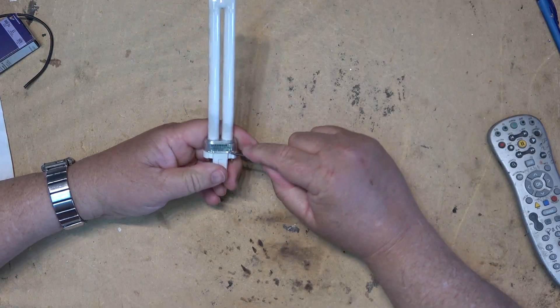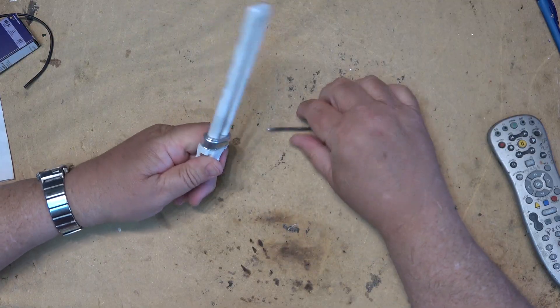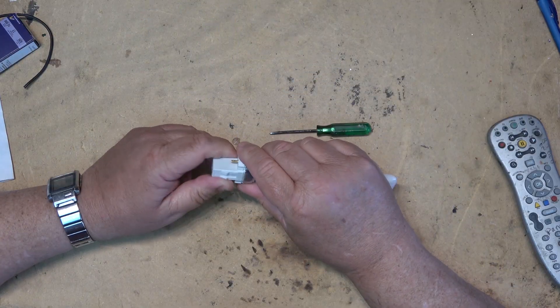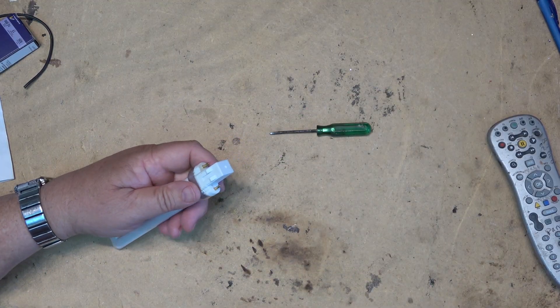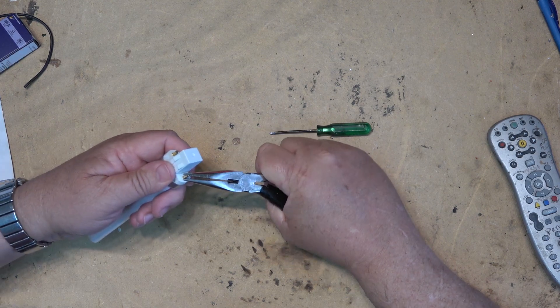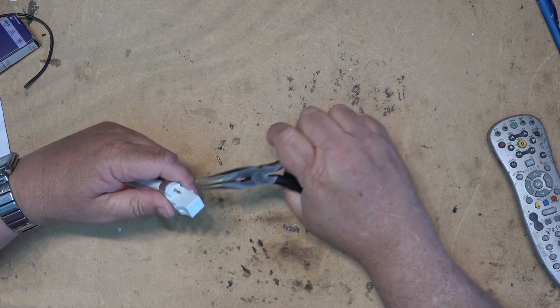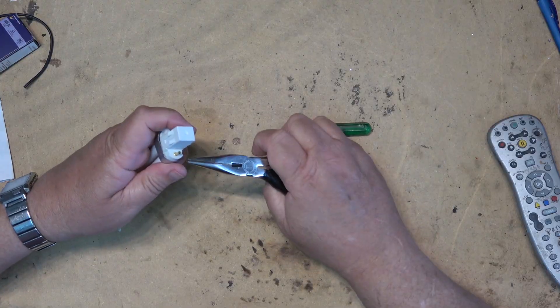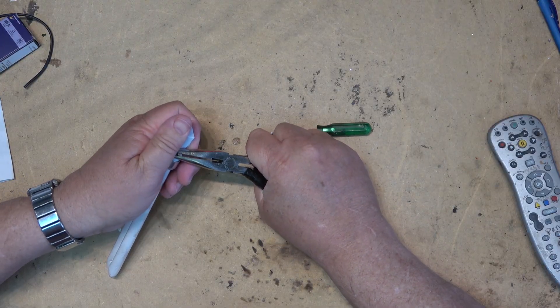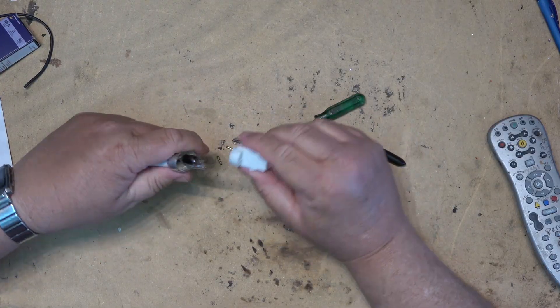This should lift off and we should see in the bottom here the starter. Maybe I got to cut the pins, that's a possibility. The pins might be holding it, so we'll just break off the pins. Yeah, that's what it is, it's the pins that are holding it. Now we can remove it.